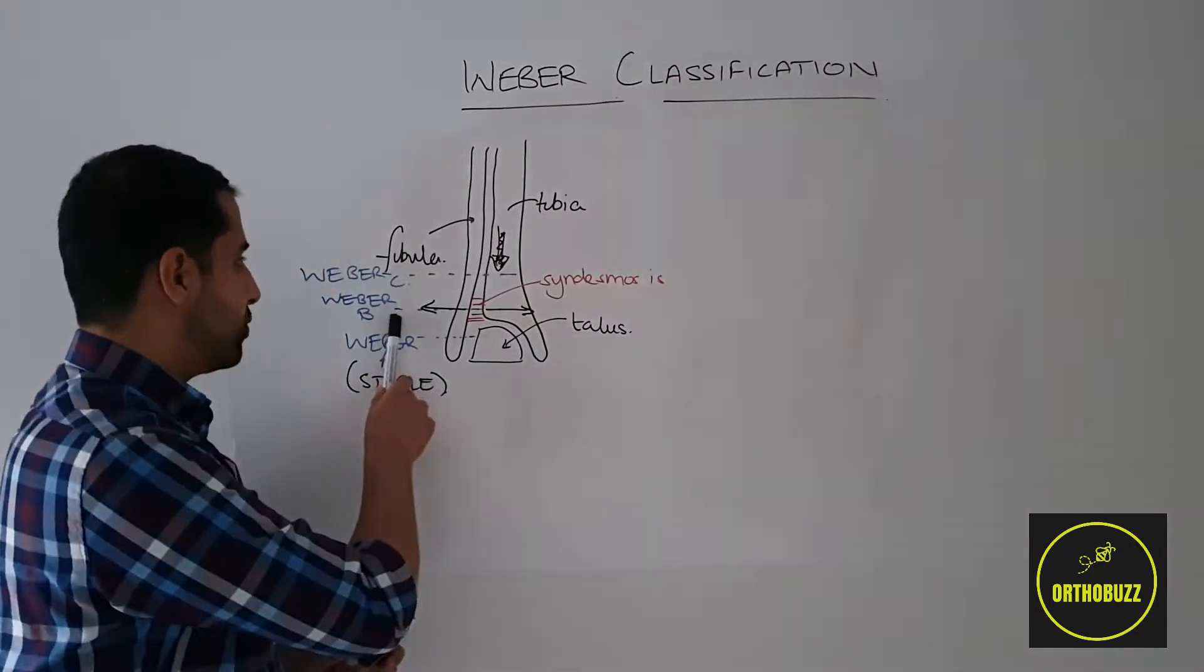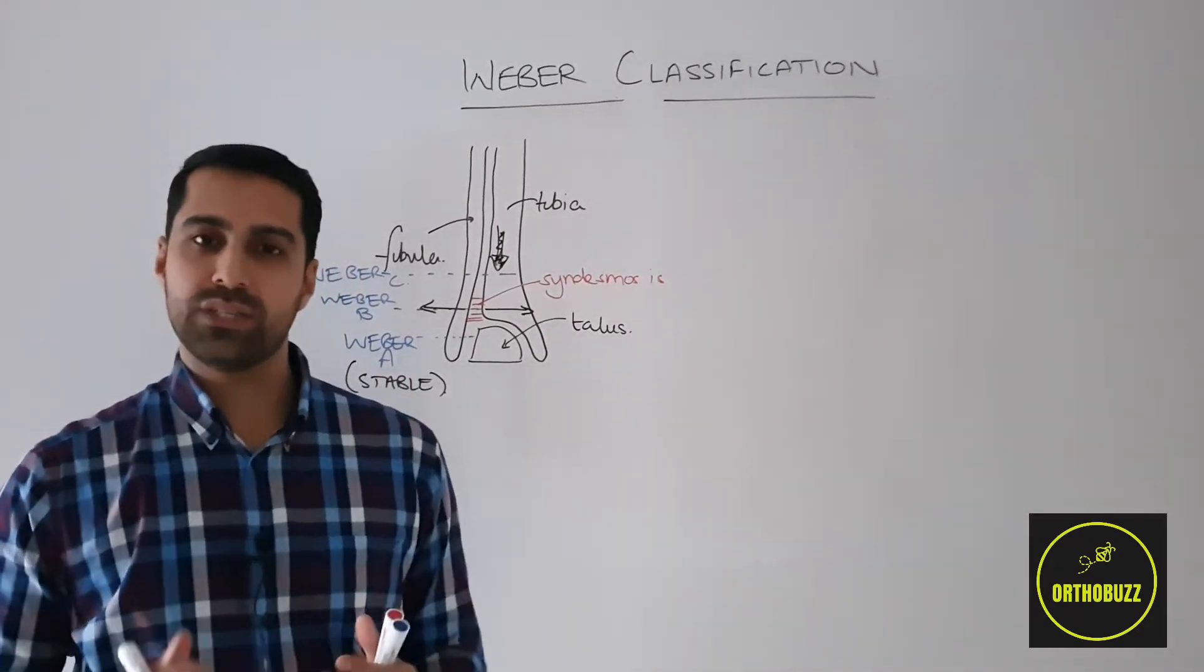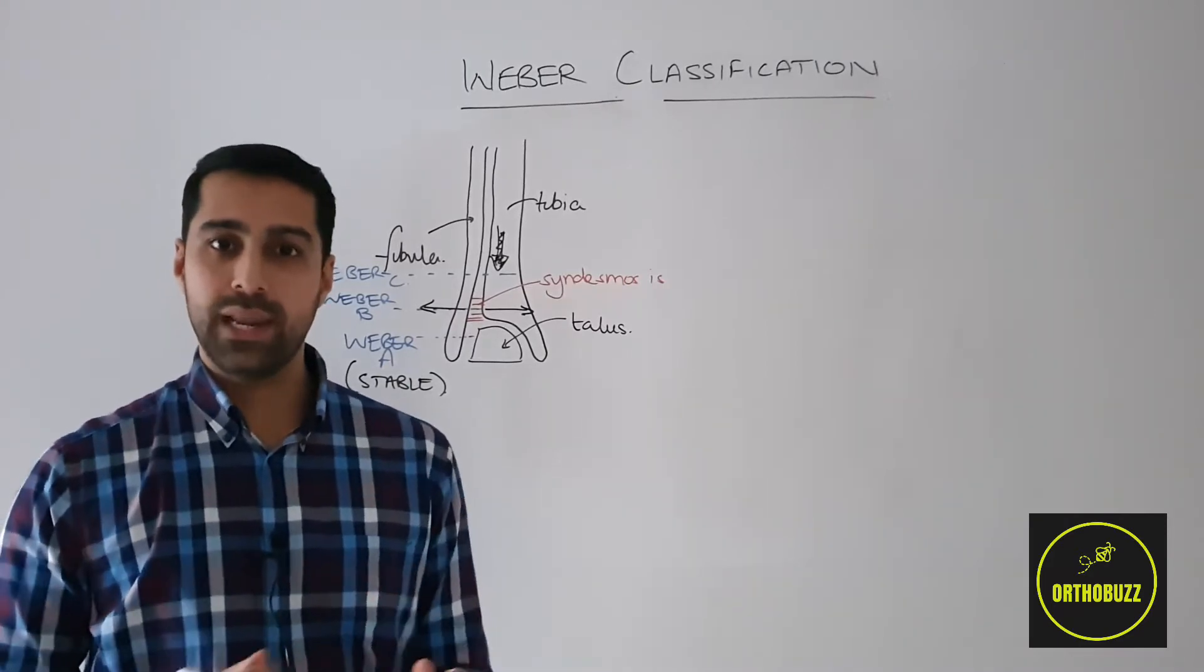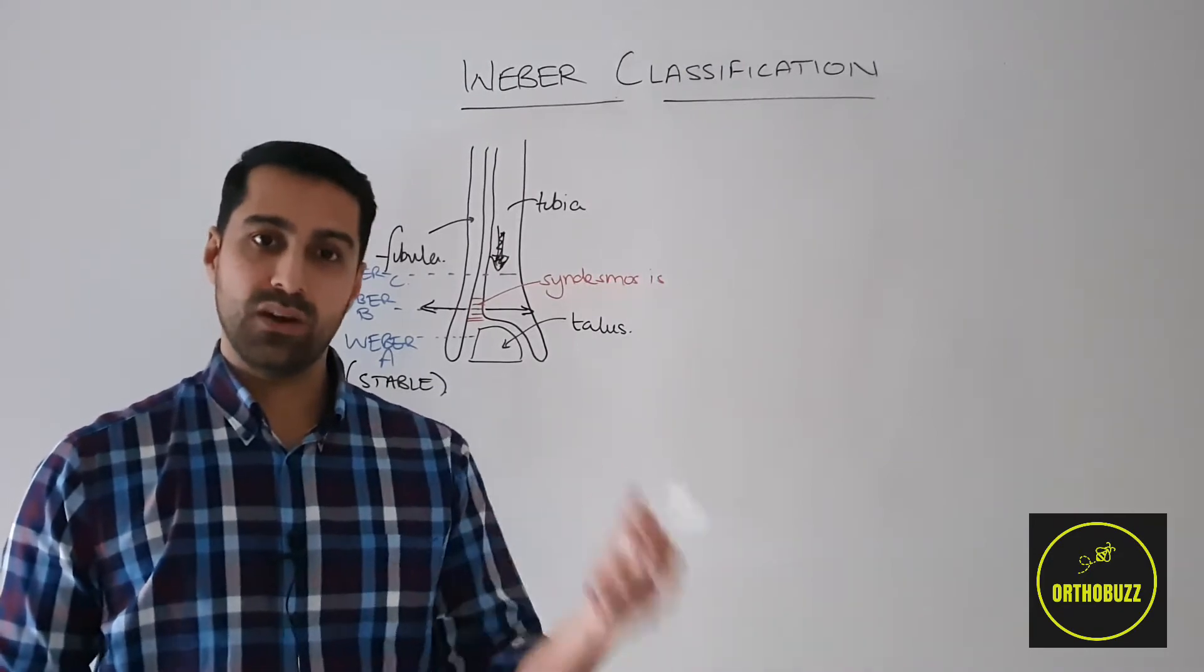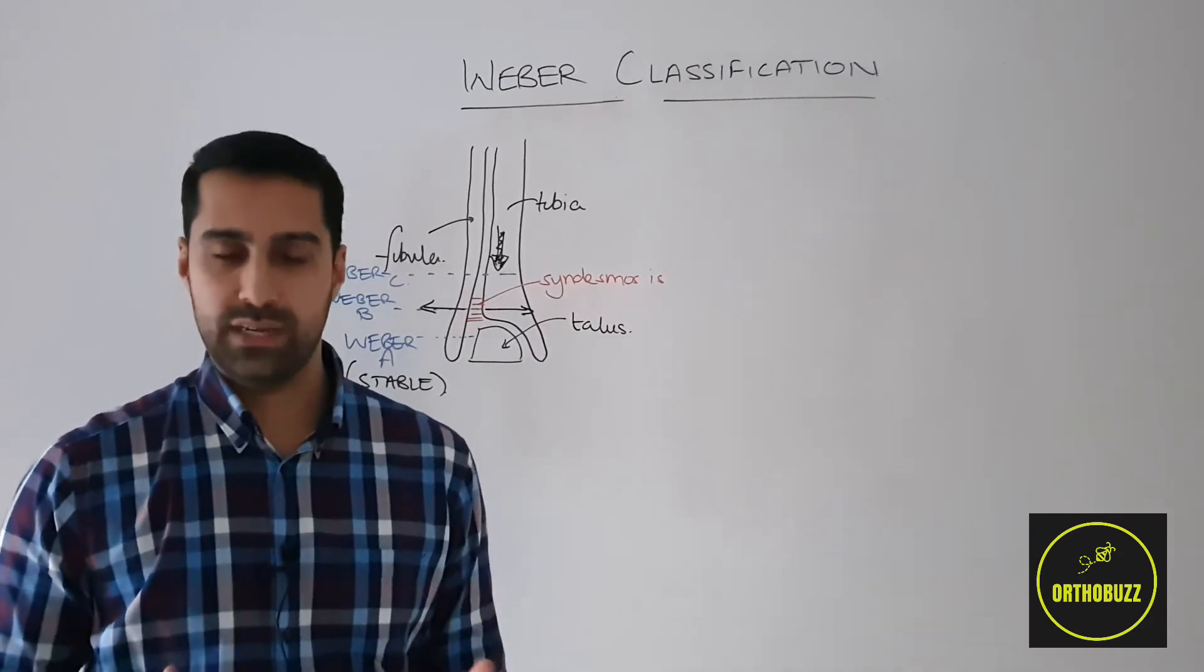And then we have the category in the middle, the Weber B ankle fractures. These are ankle fractures that go through the syndesmosis and it can often be unclear whether these have compromised the syndesmosis and therefore whether these are unstable injuries or whether the syndesmosis has not been affected.